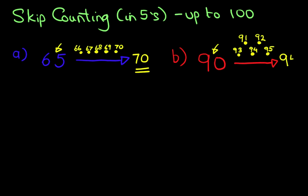Let's write that down: 95. That is the answer. So the number after 90 when counting in fives is 95.